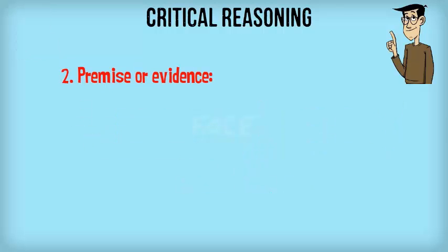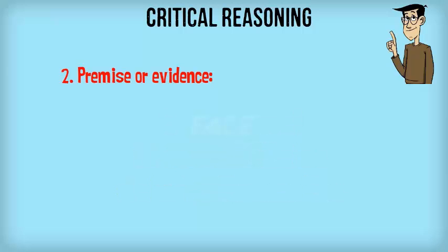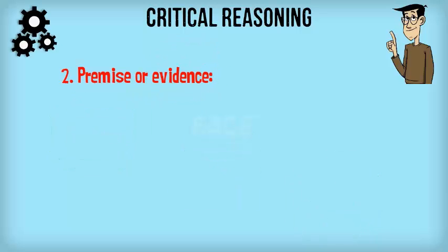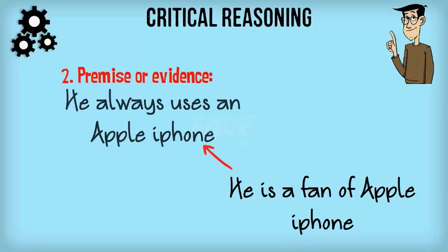Term 2: Premise or Evidence. It's the piece of information that is stated in the question. A premise may be a fact, an opinion, or a claim that provides support for the conclusion. It may otherwise be called evidence. So, in the example given, the statement that he is a fan of Apple iPhone is derived from the fact that he always uses an Apple iPhone. The premise or evidence here is: he always uses an Apple iPhone.